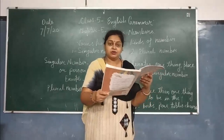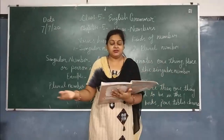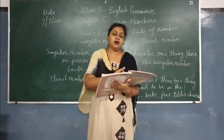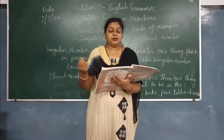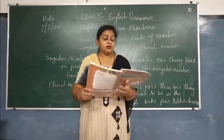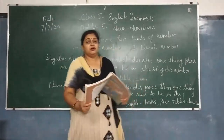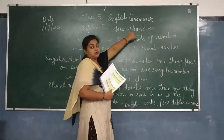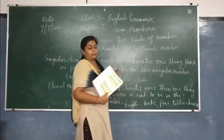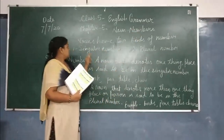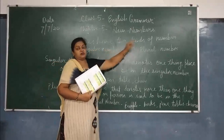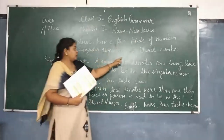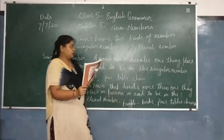For example: book, chair, pen, etc. So, here is our lesson — Noun Number. Noun has two kinds of number: singular number and plural number.